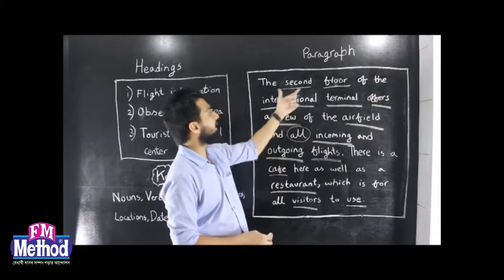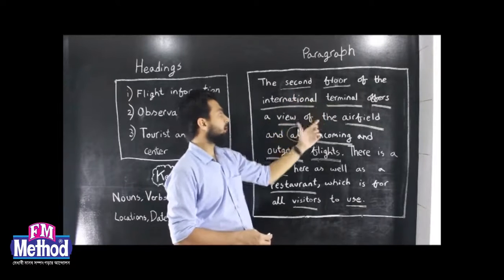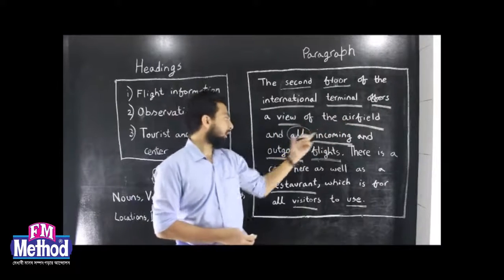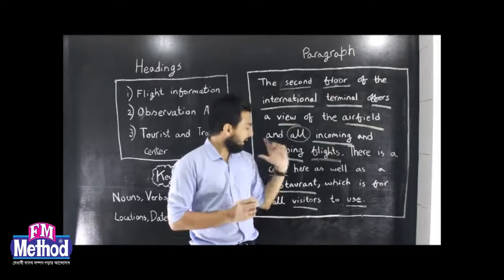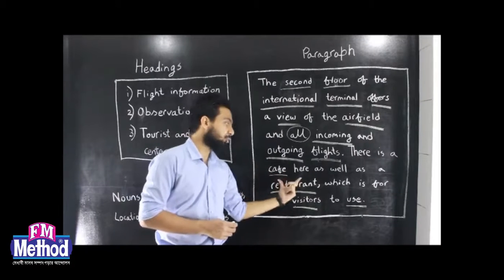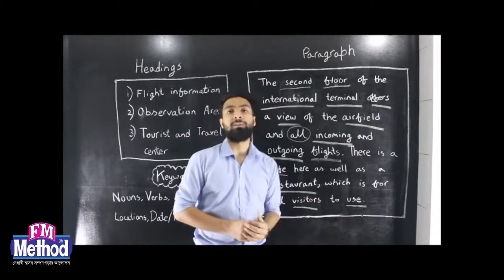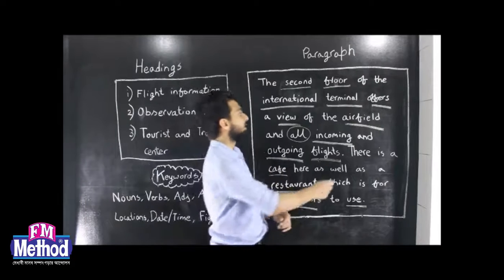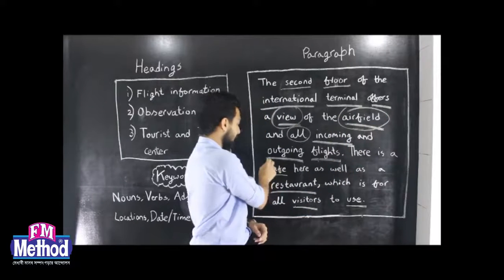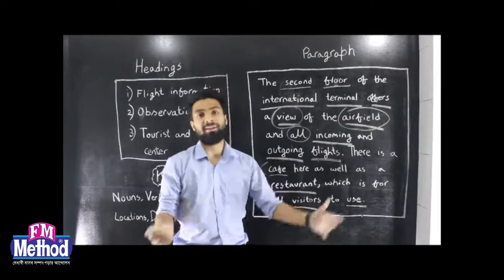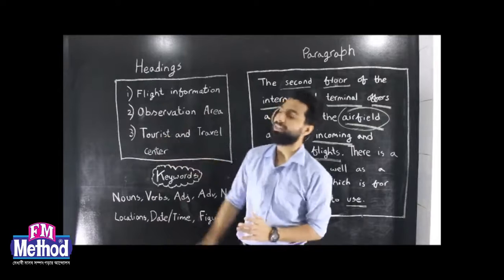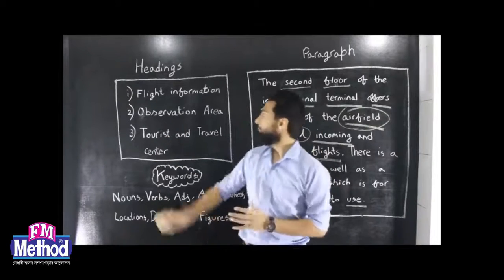So we have two main ideas here: one is a view of the airfield with incoming and outgoing flights, and the other is about the restaurant and cafe. Now, there are two headings which could be relevant. The first is 'flight information' — we can see incoming and outgoing flights, but flight information would typically refer to specific flight times, dates, and figures. We need to check if that information is actually present.